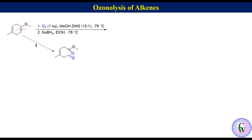In the second step, where there is reduction with NaBH4, the product will be methyl (Z)-6-hydroxy-4-methyl-hex-3-enoate.